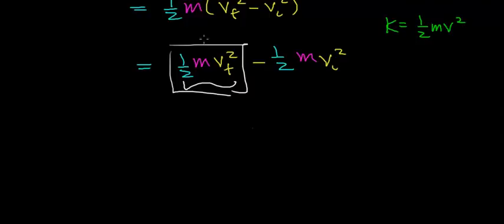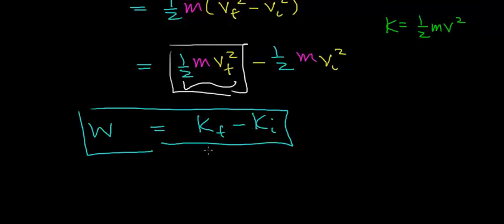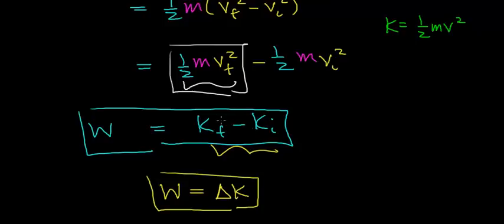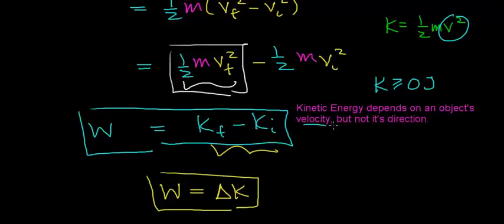The kinetic energy of an object is written as one-half times mass times velocity squared. So we can abbreviate: work equals final kinetic energy minus initial kinetic energy, which is the change in kinetic energy. This is the work-kinetic energy theorem. Notice that since velocity is squared, kinetic energy is always greater than or equal to zero, and is measured in joules. Kinetic energy depends on the object's speed but not its direction, making energy mathematics often easier than the vector mathematics required by Newton's laws.